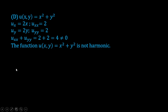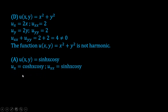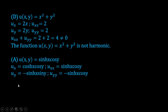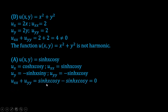Let's check another option: u(x,y) = sinh(x)cos(y). Differentiating with respect to x gives cosh(x)cos(y), and again gives sinh(x)cos(y). Differentiating with respect to y gives -sinh(x)sin(y), and again gives -sinh(x)cos(y). So u_xx + u_yy = sinh(x)cos(y) - sinh(x)cos(y) = 0. Therefore u(x,y) = sinh(x)cos(y) is harmonic — not the correct option.